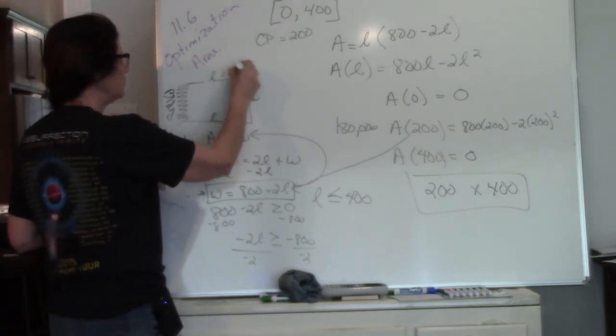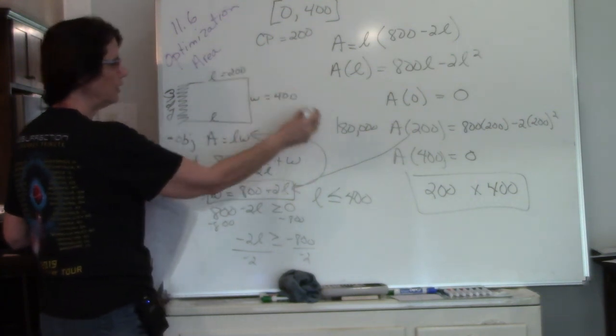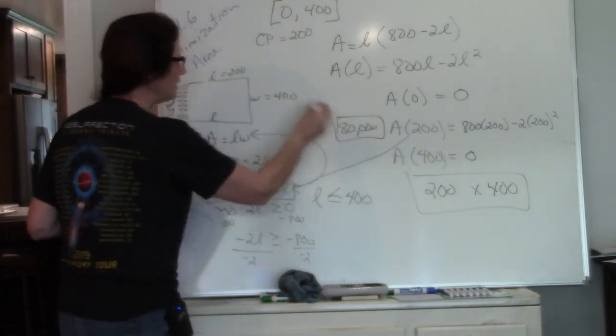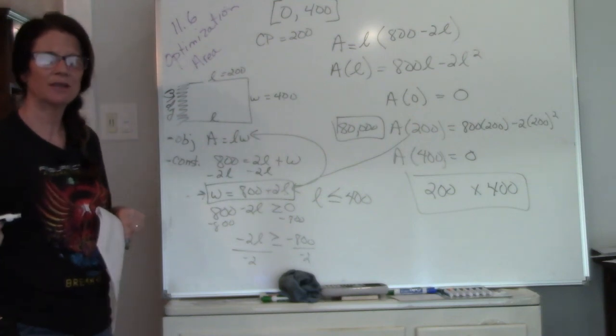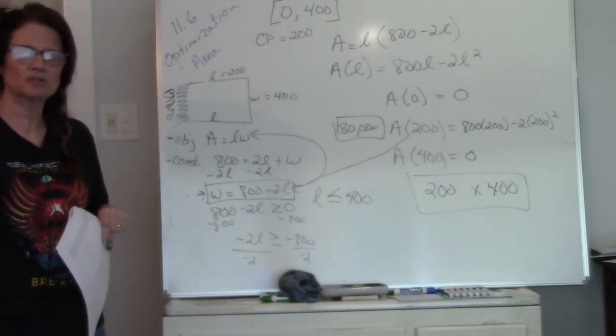So my length was 200, my width was 400. 200 times 400 gives me my 80,000. That's my maximum area. There we go, and I'll do one more.